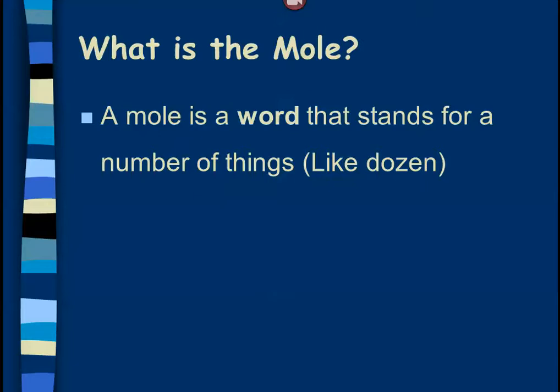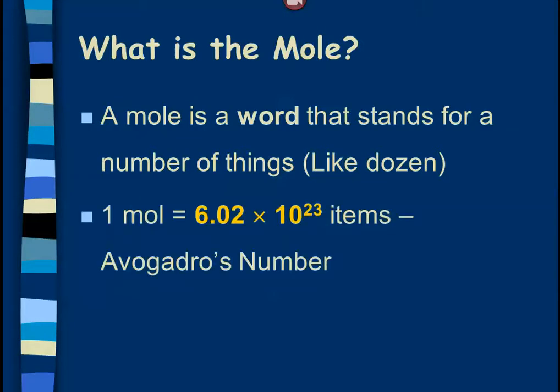Dozen — that's another word that stands for a number of things. Dozen stands for twelve. You could have a gross, which is a dozen dozen, that's 144. There are several words in the English language that stand for a number of things, and a mole is one of them. The difference is, a mole just happens to be a really, really big number. A mole is 6.02 times 10 to the 23rd things.